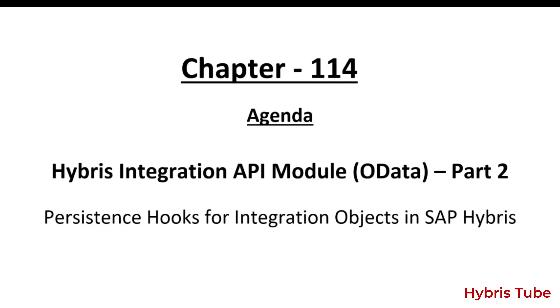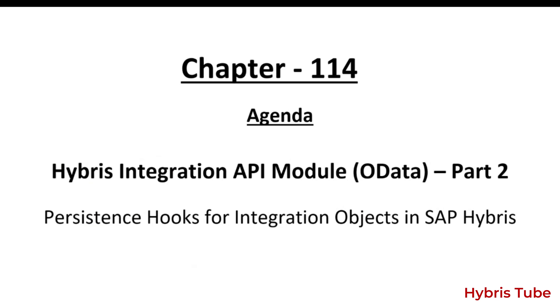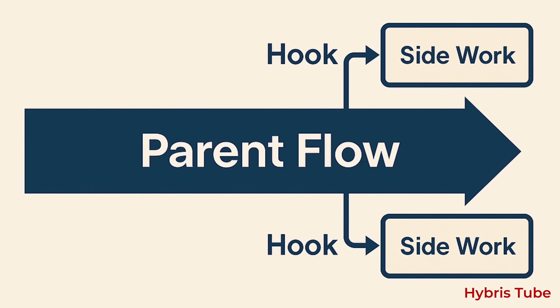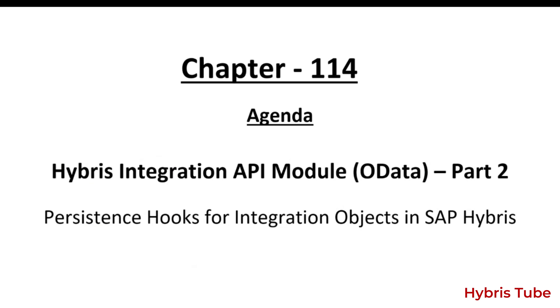Hello everyone, welcome back to the HybrisTube. In my previous video, Chapter 110, we talked about hooks in general. I explained that hooks are like extension points in a parent flow — if you have a main process running and you want to plug in some extra logic as a side flow without disturbing the parent, you can implement hooks. In today's video, we are going to focus on a very practical type of hook in SAP Commerce, which is persistence hooks for integration objects.